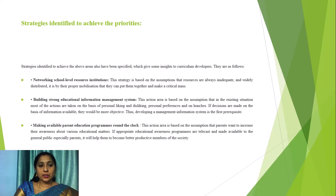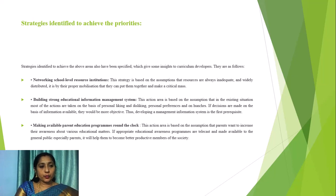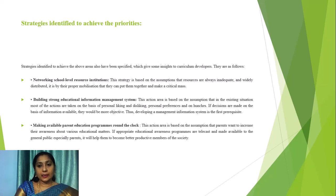These strategies include networking school-level resource institutions, building strong educational information and management systems, and making available parent education programs around the clock. This strategy is based on the assumption that resources are always inadequate and widely distributed, and it is through their proper mobilization that a critical mass can be formed. Building a strong educational information management system is based on the assumption that if decisions are made on the basis of available information rather than personal preferences or hunches, they would be more objective. Thus, developing a management information system is the first prerequisite.